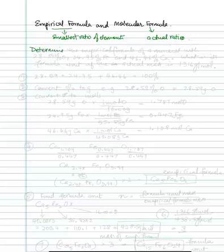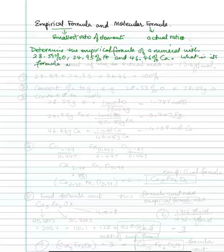Determine the empirical formula of a mineral with 28.59% oxygen, 24.95% iron, and 46.46% calcium. What is its formula unit if the actual mass is 1,316 grams per mole?